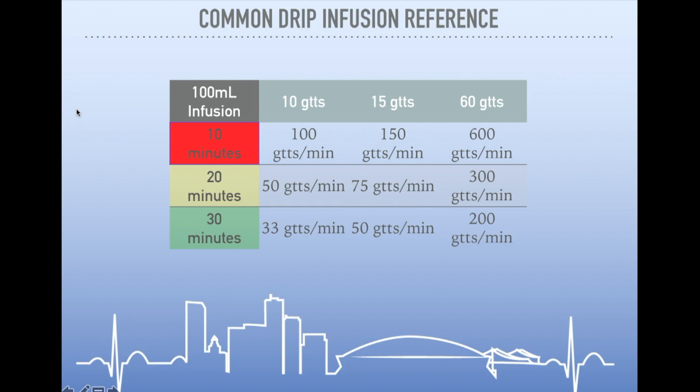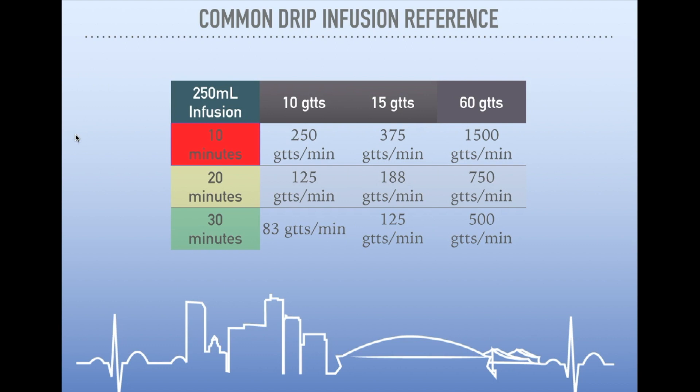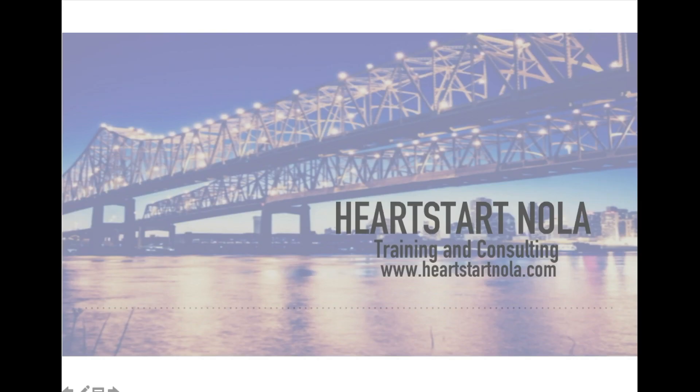If you're hanging infusions to gravity on a regular basis, we recommend that you get a quick reference guide. Most infusions that we hang to gravity are made in 100 milliliters or 250 milliliter bags and hung over 10 minutes, 20 minutes, or 30 minutes on a 10-drop, 15-drop, or 60-drop set.